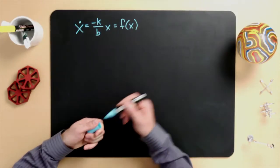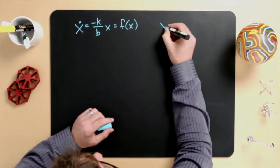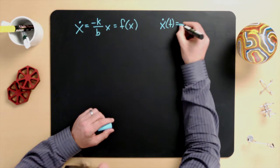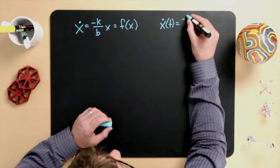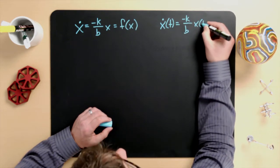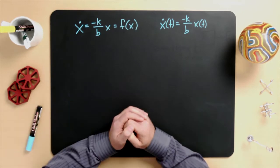The differential equation, as I'm sure you remember, is x-dot equals minus k over b times x, which equals f of x. It's helpful to rewrite this so that the time dependence is explicit: x-dot as a function of t is equal to minus k over b times x as a function of t. The position is therefore allowed to change as a function of time. I'm going to refer to the right-hand side of the differential equation as f of x of t.